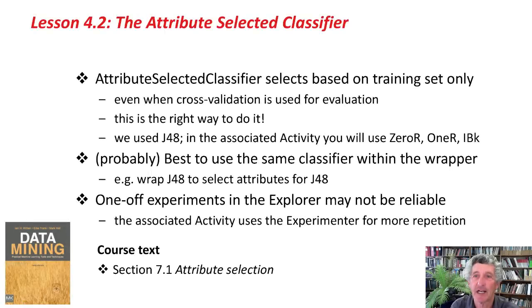In this lesson, we've looked at the attribute selected classifier, which selects attributes based on the training set only — which is the right way to do it. In the activity, you're going to use some other classifiers: 0R, 1R, and IBK. It's probably best to use the same classifier within the wrapper, for example wrapping J48 to select attributes for J48. The one-off experiments in the Explorer that we've been doing in this lesson are probably not reliable, and the associated activity will use the experimenter for more repetition and higher reliability. Good luck, and we'll see you in the next lesson. Bye for now!